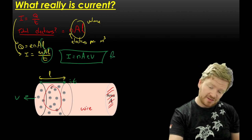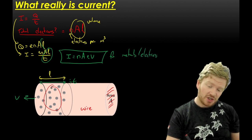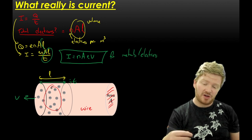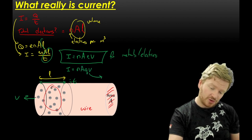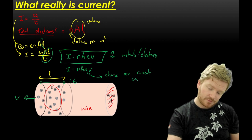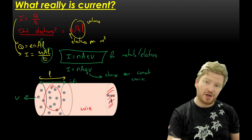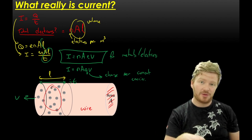This equation is for metals or with electrons. Sometimes we have things that aren't electrons - in that case I can say I is equal to N·A·Q·V, where this little q is the charge per current carrier. So if you have alpha particles, this would be twice the charge of an electron. Sometimes you might need to use that one as well.